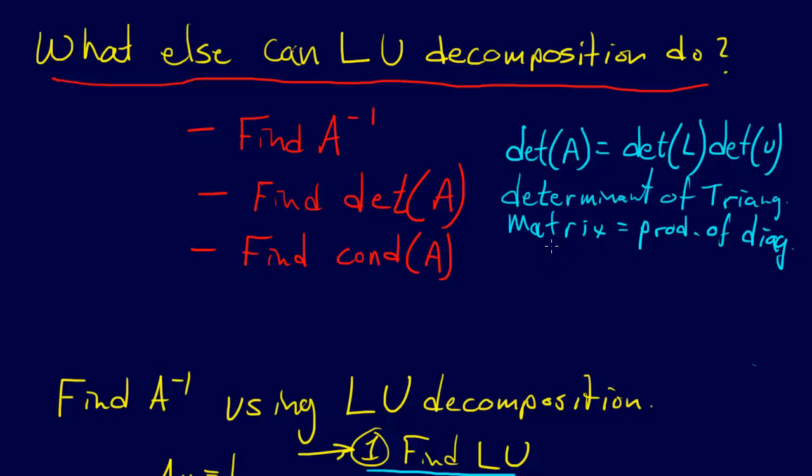So the determinant of L - I'll do that one in my head - if we have ones on the diagonal like we did using the decomposition we did, the determinant of L is just going to equal one. And so the determinant of A is just going to equal the determinant of U.